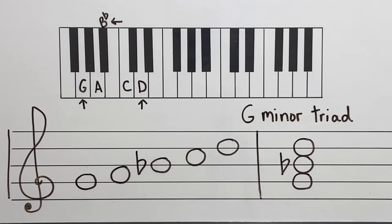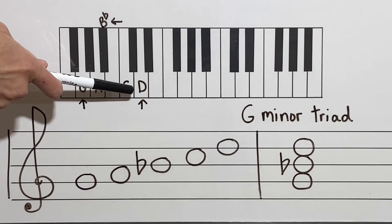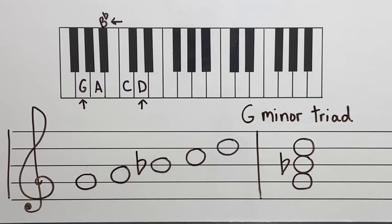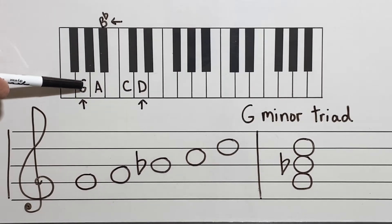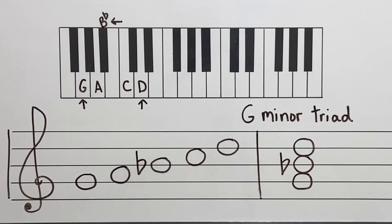The next triad we're going to learn is G minor. I'm going to start with our G minor five finger pattern. I have G, A, B flat, C, and D, with arrows on my root, my third, and my fifth — G, B flat, and D. When I play all three of those at the exact same time, that's going to be my G minor triad.